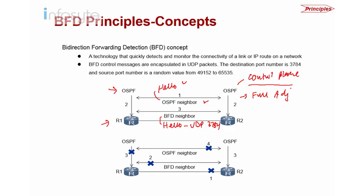Changing hello packets affects both R1 and R2. Whereas BFD works on the forwarding plane, so it can be implemented at the hardware layer rather than the control plane, taking CPU burden off. BFD is not exclusively for OSPF — you can run it on BGP, static routes, and ISIS, for example. There are many benefits to running BFD rather than changing fast-hello on the protocol itself.